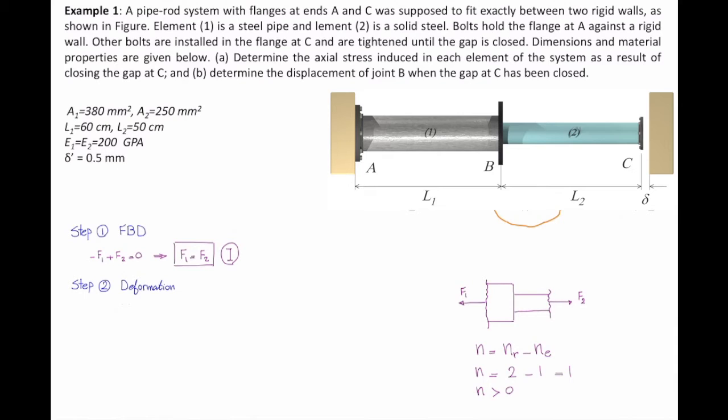Second step would be writing deformations as a function of internal force. Deformation is FL over EA. Let's plug the values. F1 is what I'm looking for. Length of the first element is given as 60 centimeters, which is equal to 600 millimeters. Modulus of elasticity is 200 gigapascals, which is equal to 200,000 megapascals. And area of element number one is 380. That simplifies to F1 divided by 126,700.